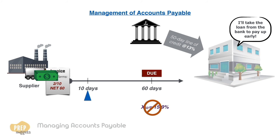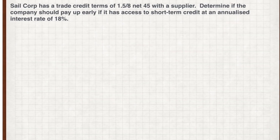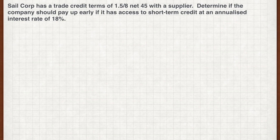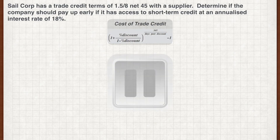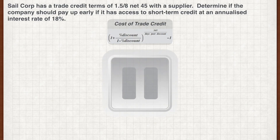Let's work on an example. Sale Corp has a trade credit term of 1.5/8 net 45 with a supplier. Determine if the company should pay up early if it has access to short-term credit at an annualized interest rate of 18%. Pause the video now and work out your answer.